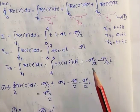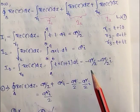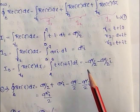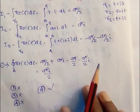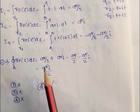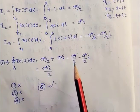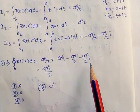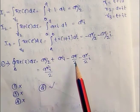Now we substitute the values of I1, I2, and I3 into equation 1. The integral over delta of Re(z) dz equals a²/2 + a²i − a²/2 − (a²/2)i. The a²/2 terms cancel.